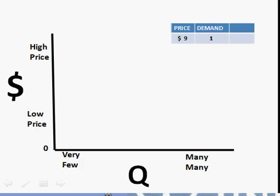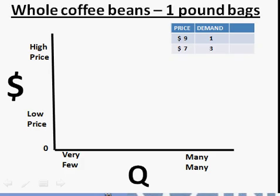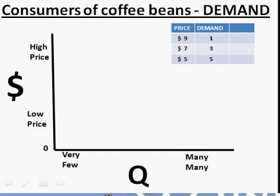We're going to be dealing with coffee beans. At $9 a pound, there's a demand for one million pounds of coffee. At $7 a pound, there's a demand for three million pounds. At $5 a pound, five million pounds. At $3 a pound, seven million pounds. At $1 a pound, nine million pounds will be demanded.